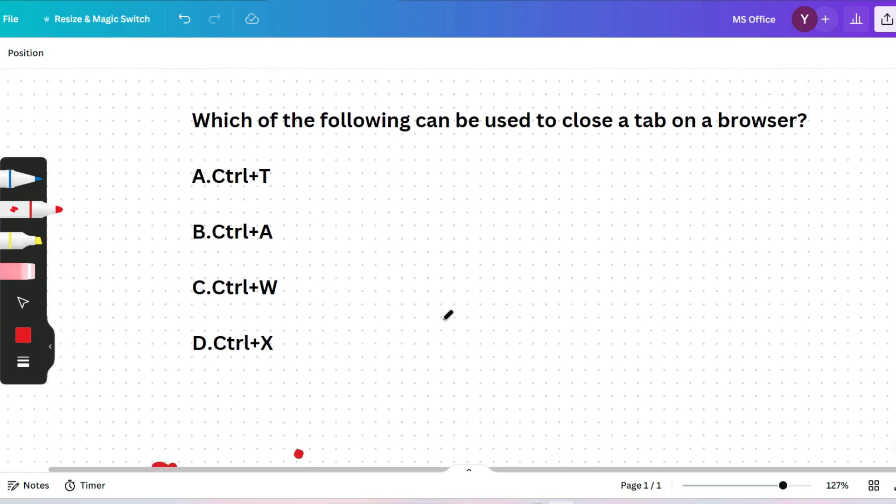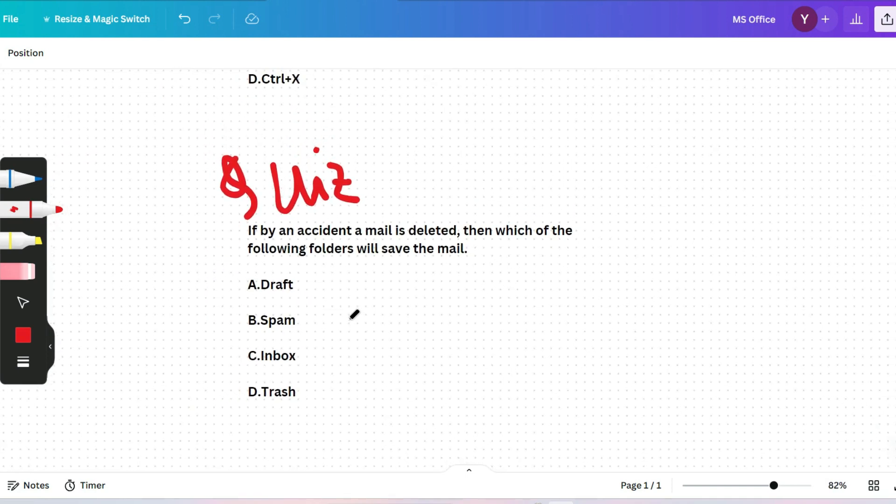Next question is: which of the following can be used to close the tab on a browser? Just now perform this: open a new tab and click Ctrl+T, open a new tab and click Ctrl+A or Ctrl+W or Ctrl+X and see what works. I hope you performed it. Yes, Ctrl+W is the correct answer. If you type Ctrl+W, then your current tab will be closed.